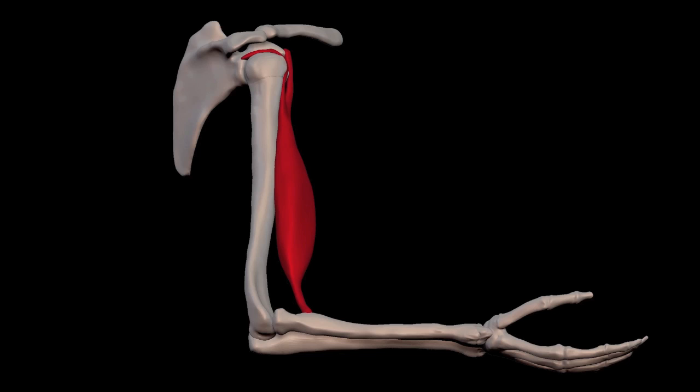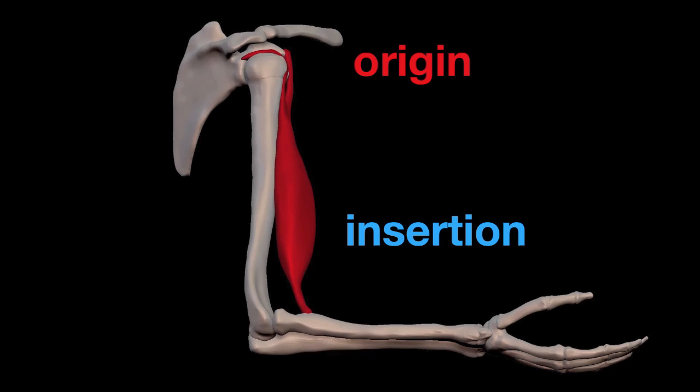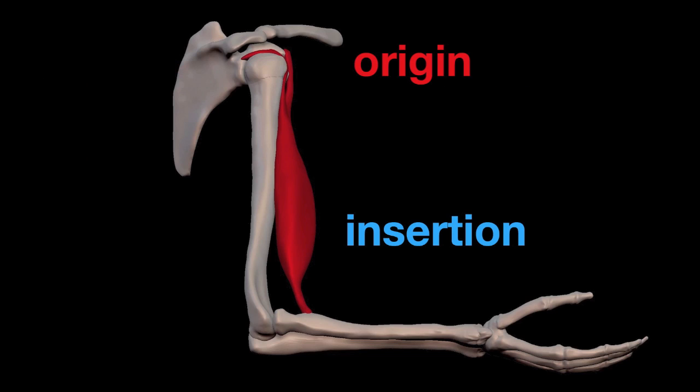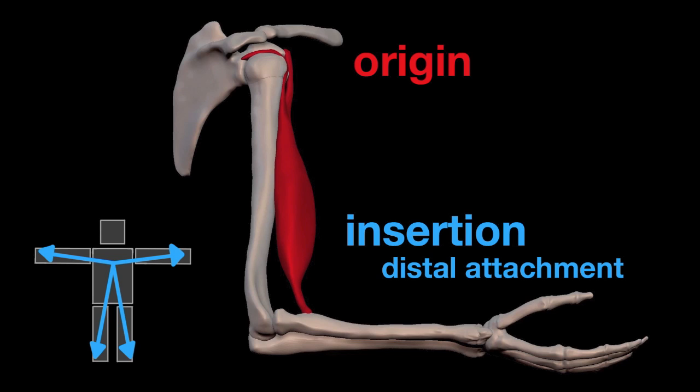When we talk about where the muscle is attached to the bone, we use the words origin and insertion. The origin is the proximal attachment. Remember, proximal means closer to the center of the body. The insertion is the distal attachment. And remember that distal means farther away from the center of the body.